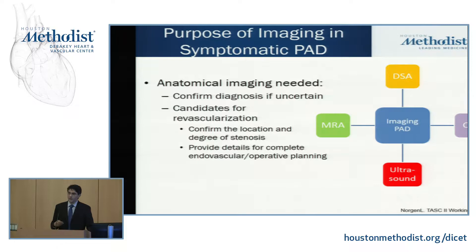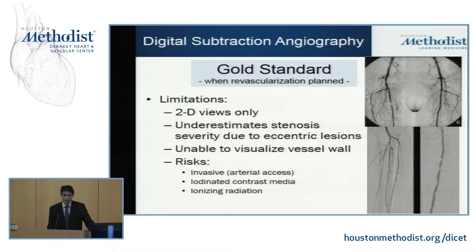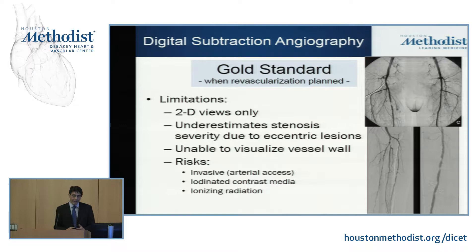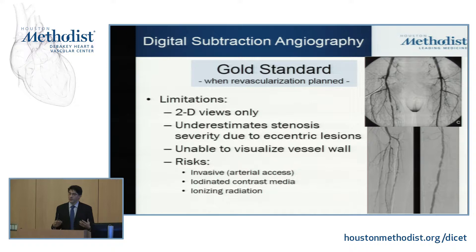Digital subtraction angiography is a procedure interventionalists know very well. A pigtail catheter is taken to the abdominal aorta — it's an invasive procedure — and a large bolus of contrast is placed and followed down the leg. This is really a 2D technique, simply a luminogram, so all you're seeing is the lumen of the artery. It's hard to evaluate eccentric lesions, and you have no information about the vessel wall. Risks include being invasive, iodinated contrast affecting the kidneys, and radiation.